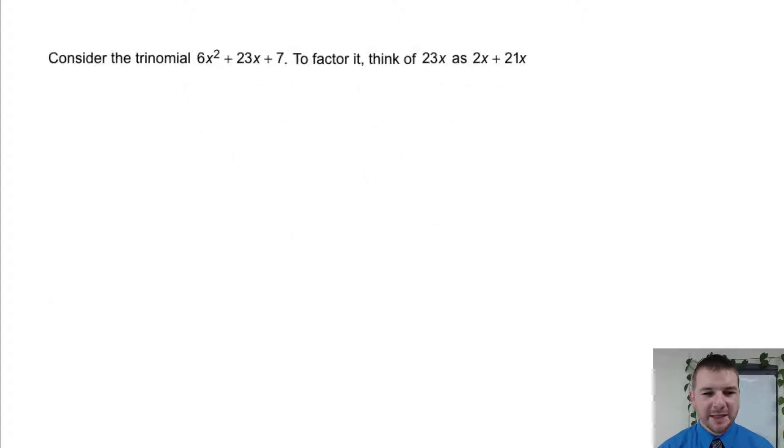Consider the trinomial 6x² + 23x + 7. To factor it, think of 23x as 2x + 21x. So simply breaking 23x into two different terms whose sum is 23x. Then we rewrite 23x in the expression and arrive at 6x² + 2x + 21x + 7.